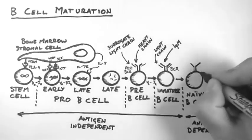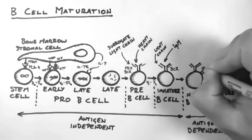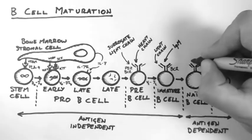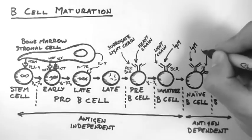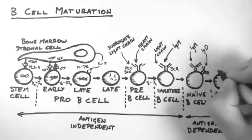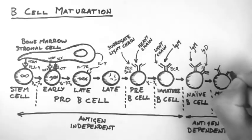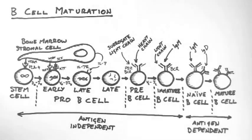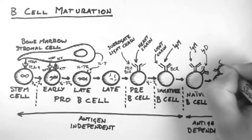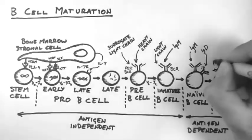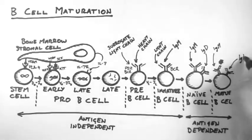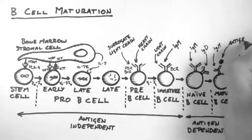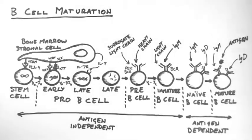This B cell migrates to the secondary lymphoid tissue, where it expresses both IgM and IgD on its surface. This B cell will stay in this state until it meets its antigen, at which point we call the cell a mature B cell. And another whole series of events to fight a possible infection take place.